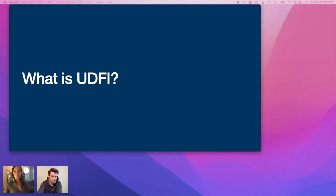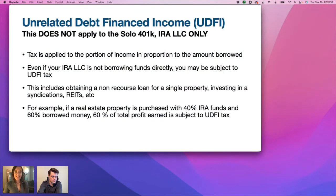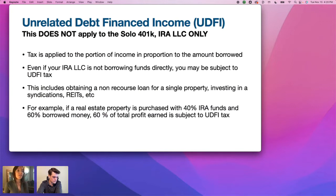Since we're talking about UBIT, let's discuss UDFI — Unrelated Debt Financed Income — which is a type of UBIT. This only applies to an IRA LLC or self-directed IRA, not to the Solo 401k. UDFI applies when a tax is applied to a portion of the income in proportion to the amount borrowed — so it only applies if you're gaining leverage for a deal through financing or a mortgage. You'll see this with non-recourse loans or syndications, which typically use some form of leverage. Work with your CPA on this one.